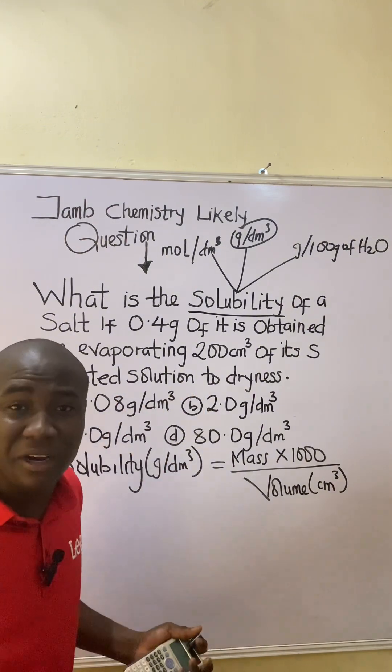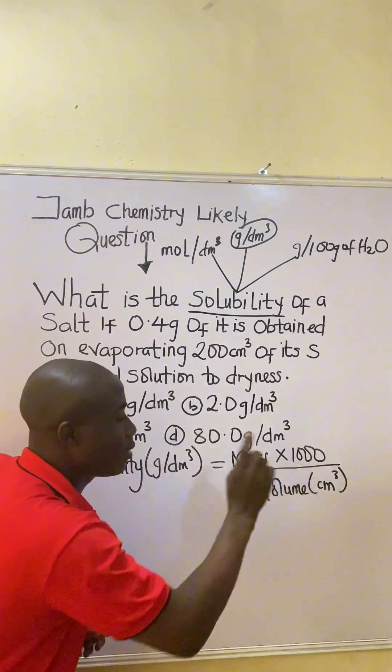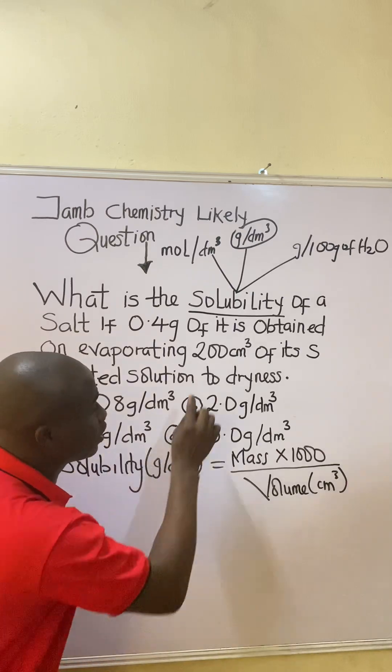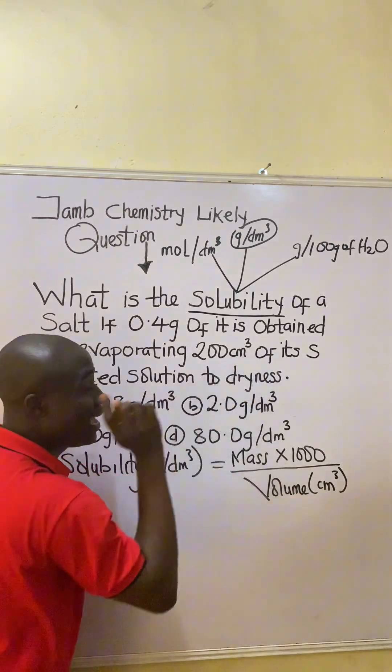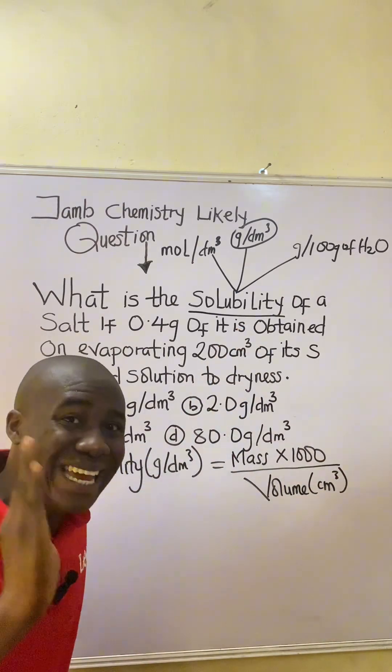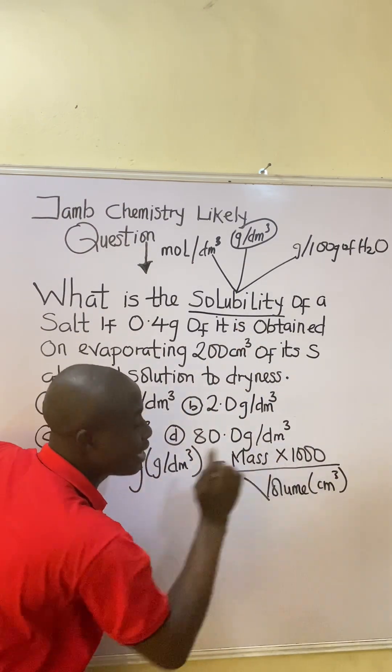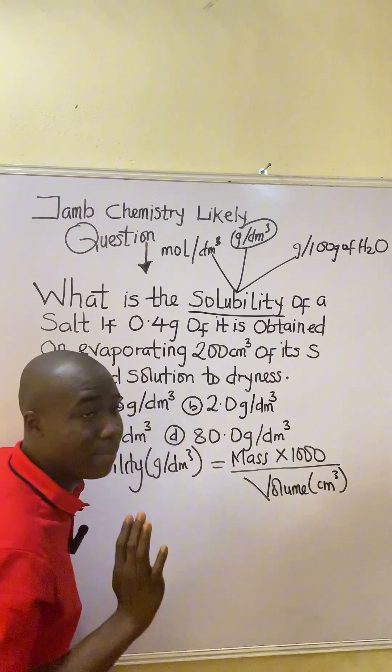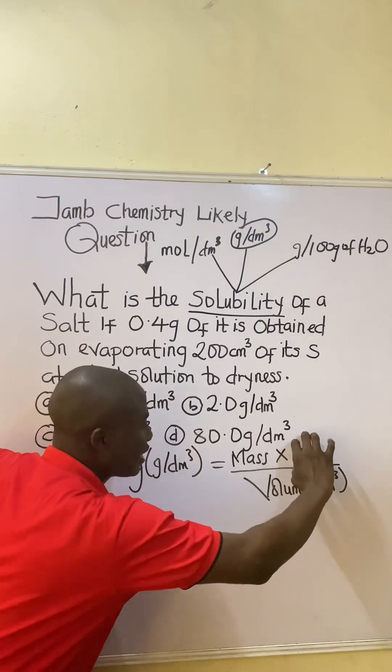Now why did I add 1000? I added 1000 because the volume in the question was expressed in cm³. For instance, if it was expressed in dm³, I'll remove the 1000, so here becomes dm³. The formula will not change, I'll just remove the 1000.